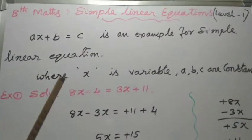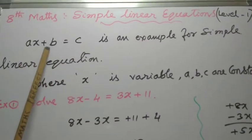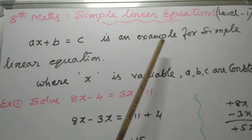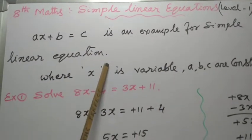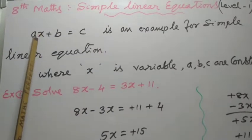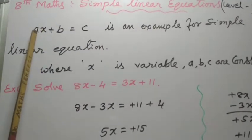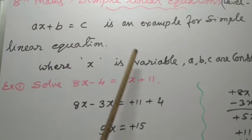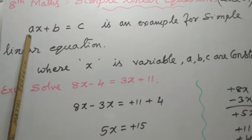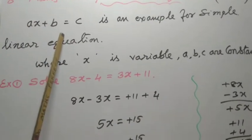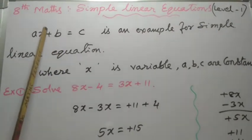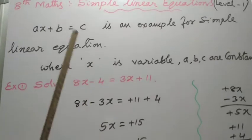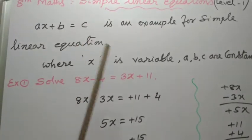Starting point: AX plus B equal to C is an example for simple linear equation. Here, X is considered as variable and A, B, C are constants, that means numbers, numerical values. And its degree, that exponent, is 1, then only it is a linear equation.